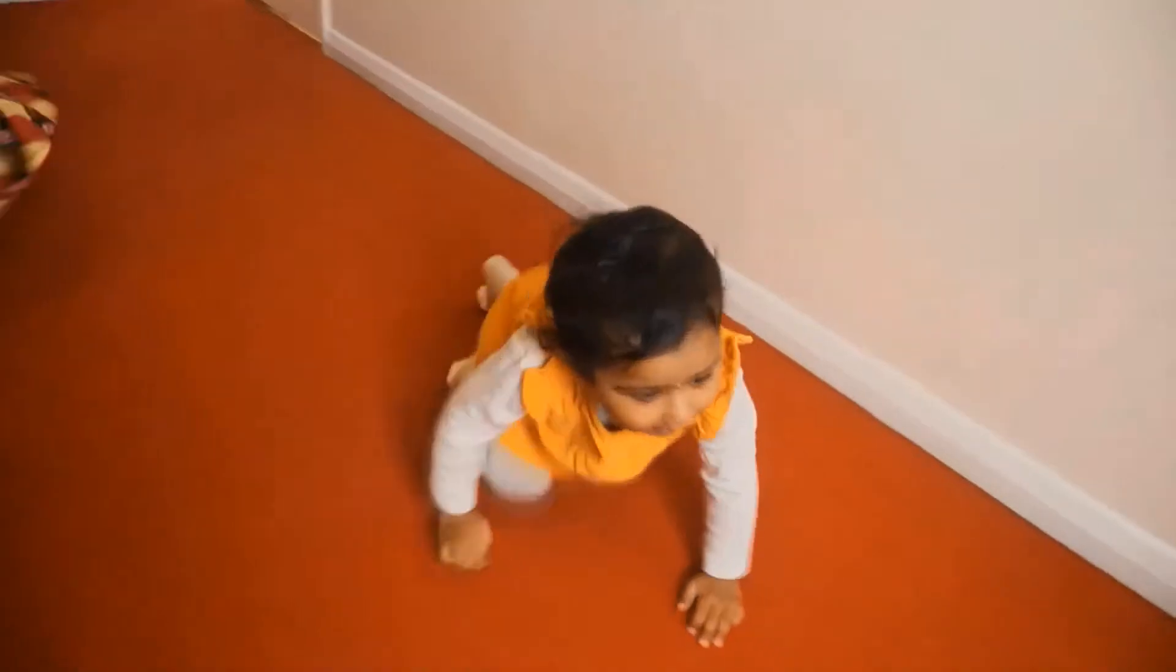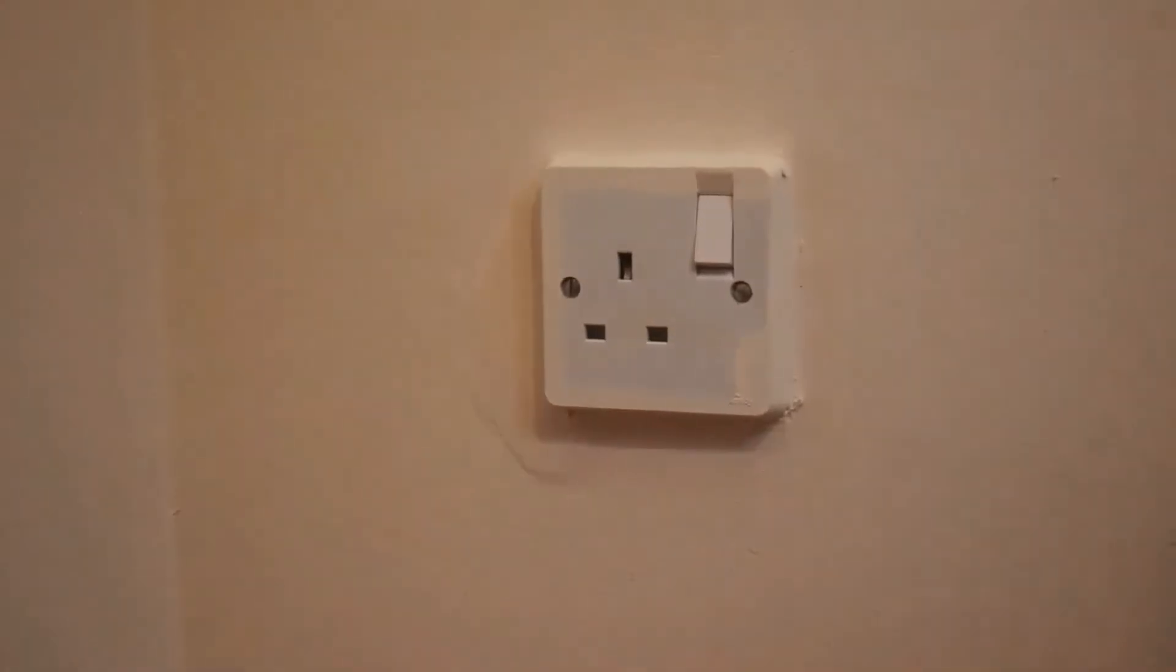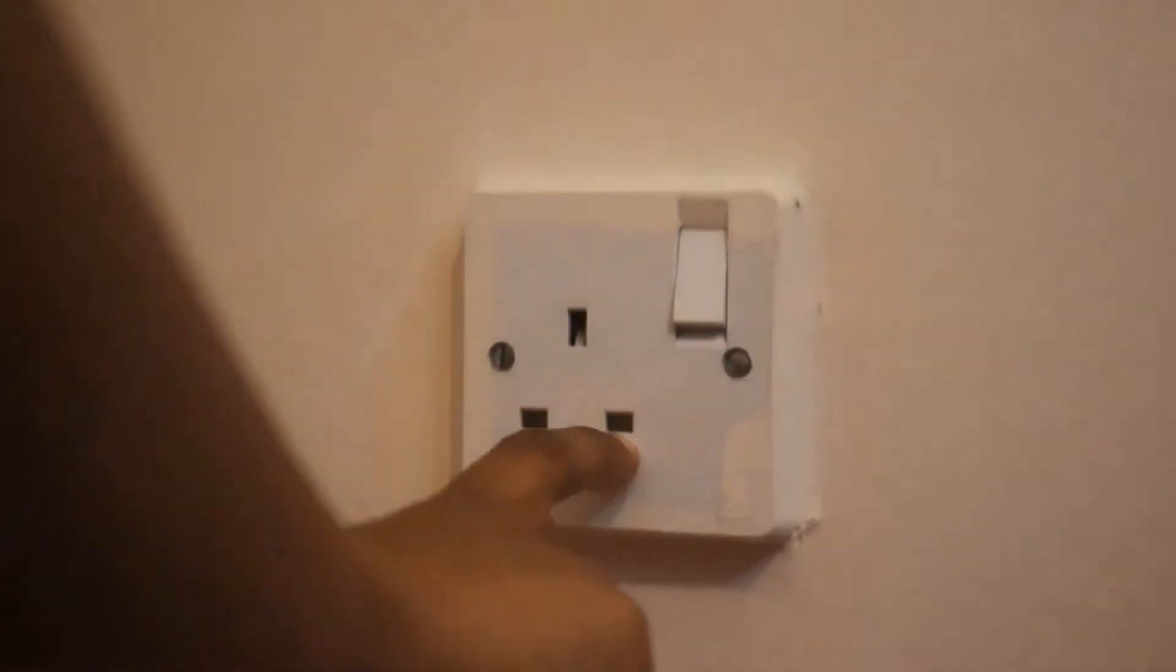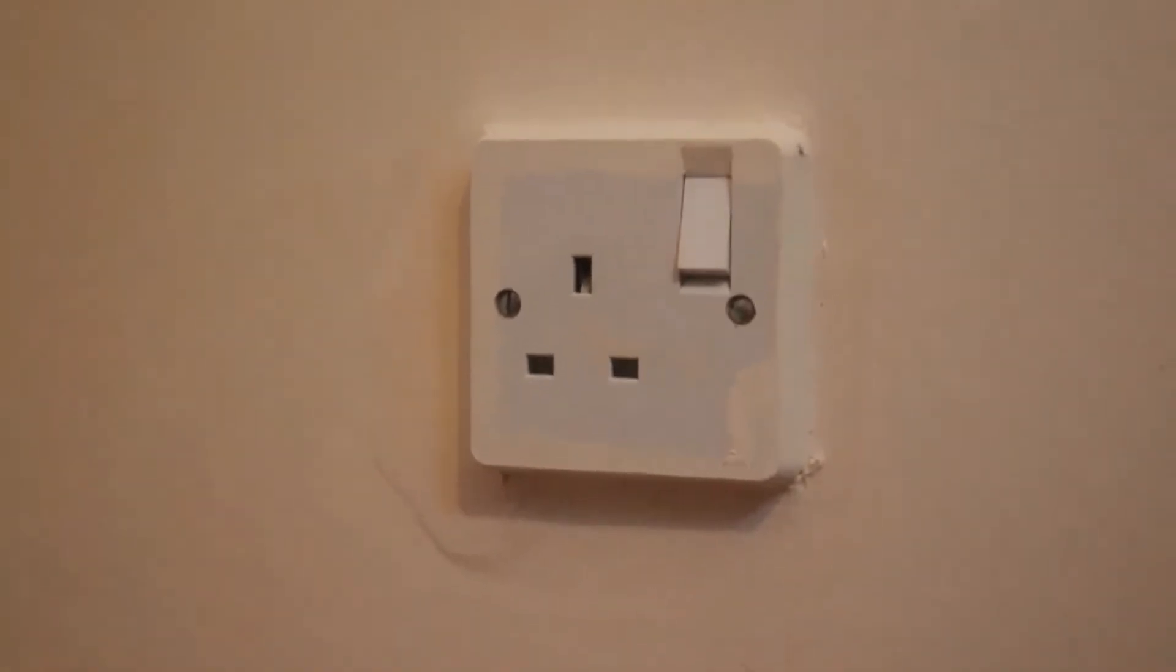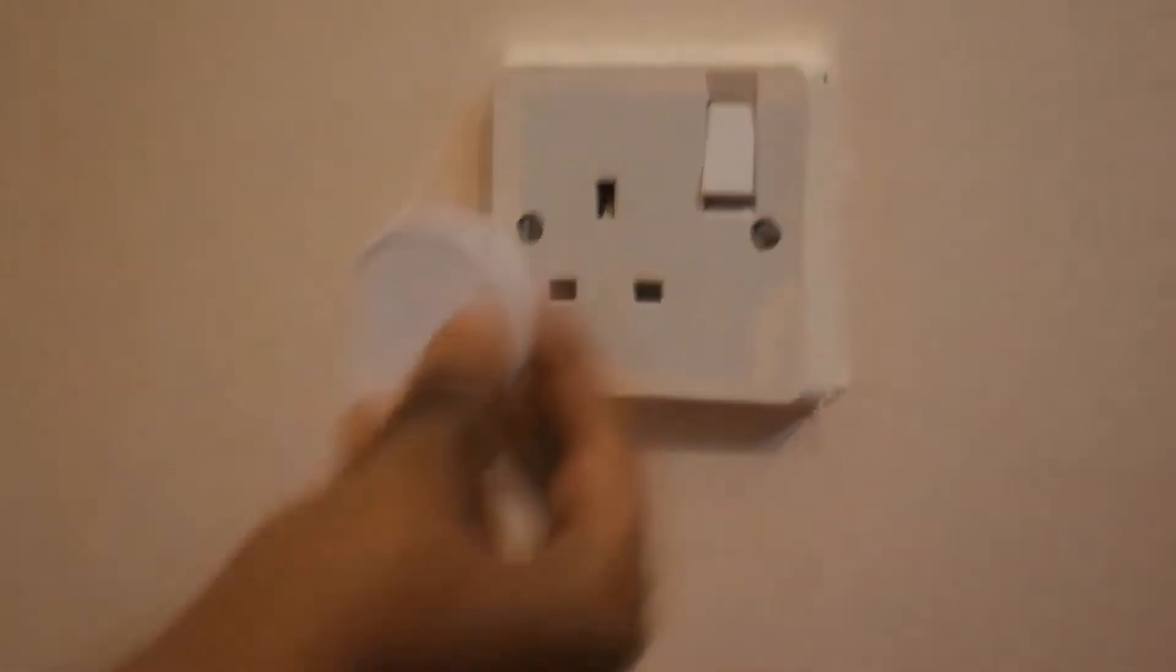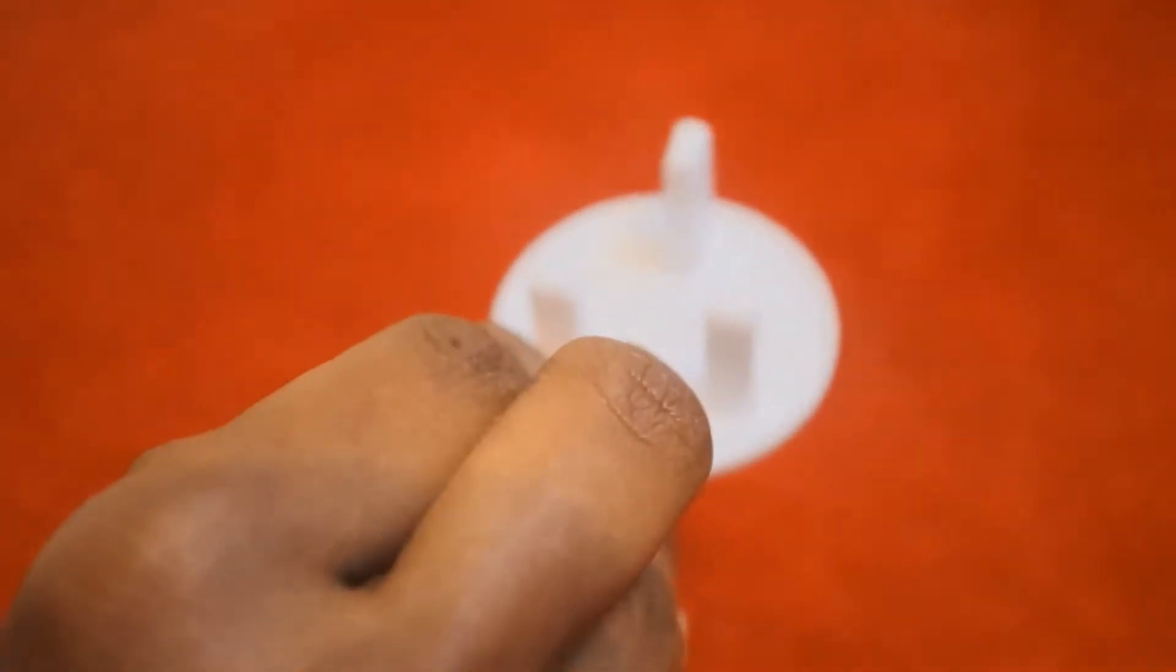First one is a socket protector. This is very close to my kids' reachable place, so I bought this to safeguard from the dangerous socket. This is the socket protector we bought. It can easily fit into the socket so that baby cannot keep little fingers into it.